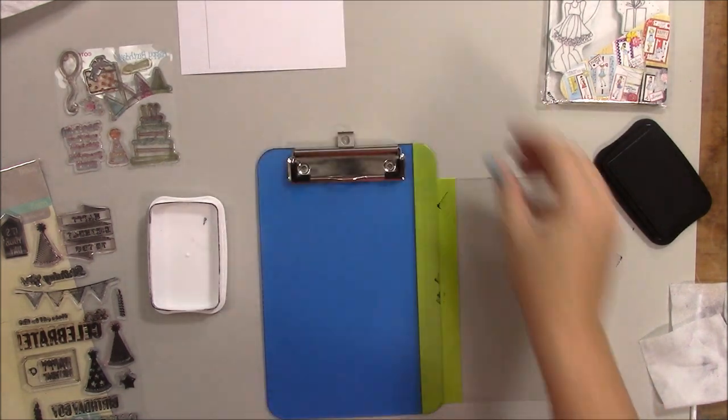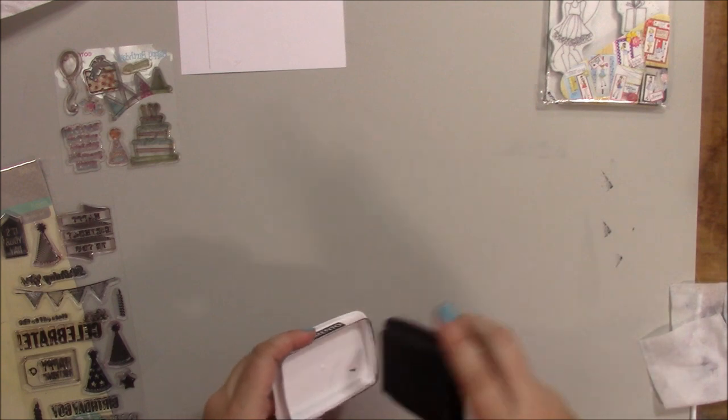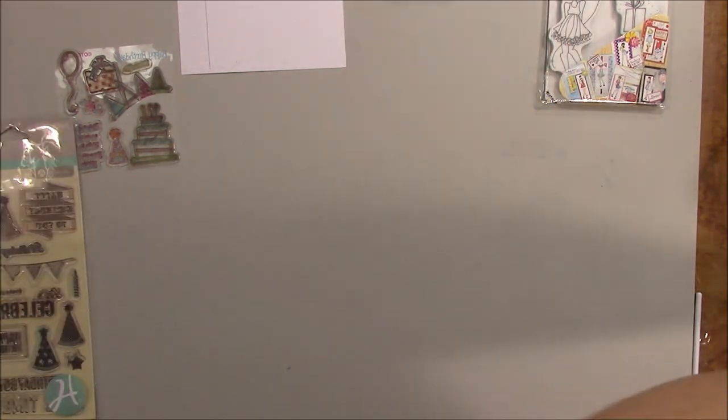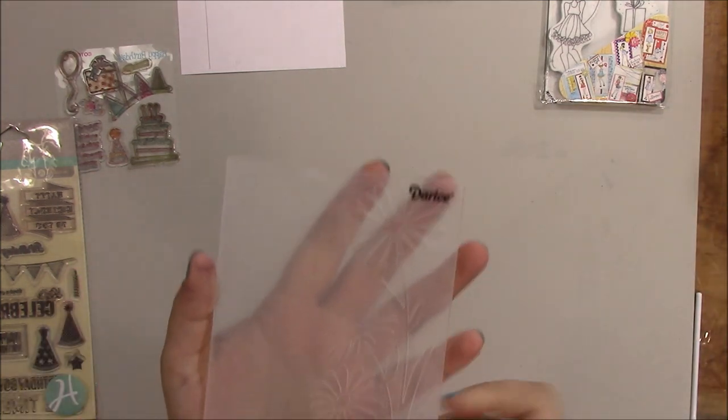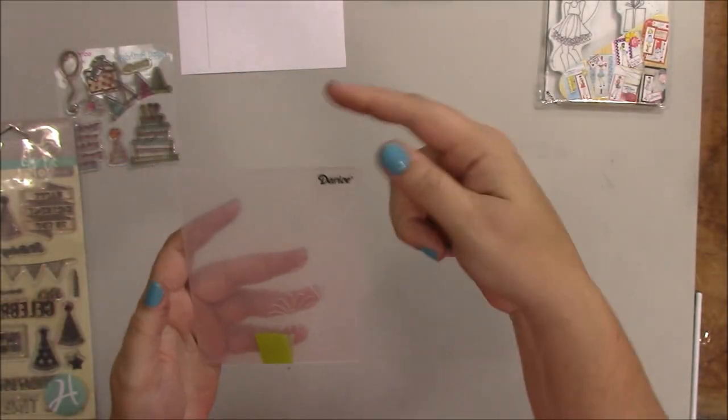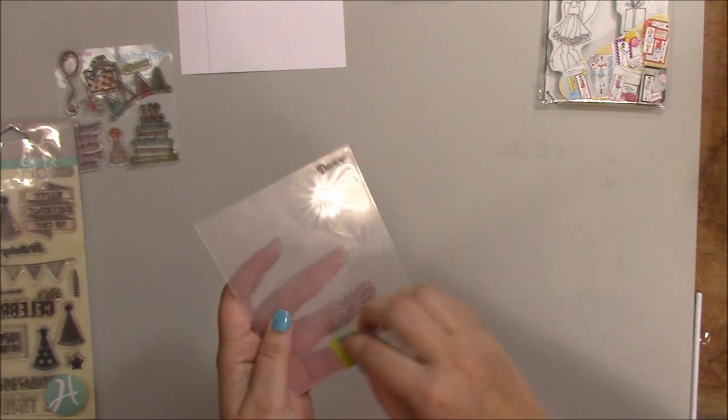So that was one example. Another way you can make the stamper or stamp positioning folder is with an embossing folder. This is a Dariste embossing folder and when I bought it, it was attached at the top, but I wanted to be able to slide the paper in and have this at the bottom. So I cut it apart.